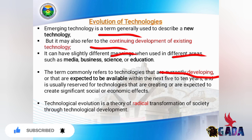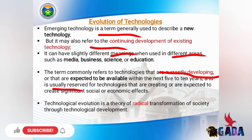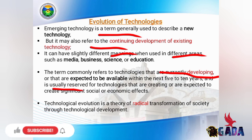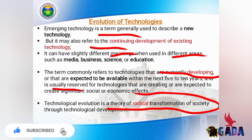Emerging technology is reserved for technologies that are created or expected to create a significant social and economic effect. Technological evolution is a theory of radical transformation of society through technological development.